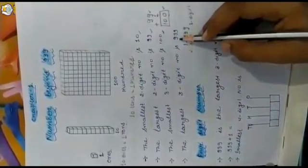When we add 1 to 99, we get 100. That means 99 is a 2-digit number and 100 is a 3-digit number. When you add 1 to the largest number of any series, you will get the smallest number of the next series. The largest 3-digit number is 999.